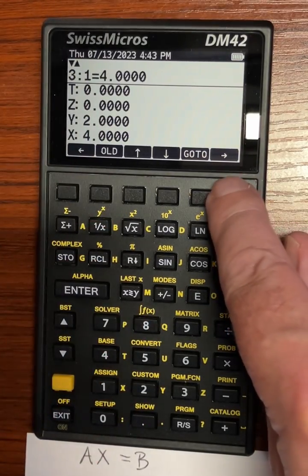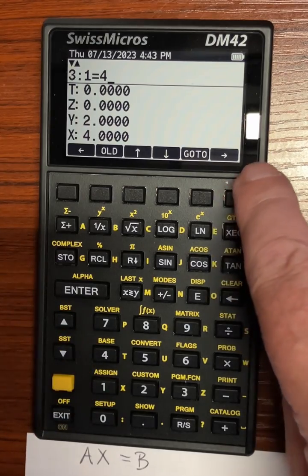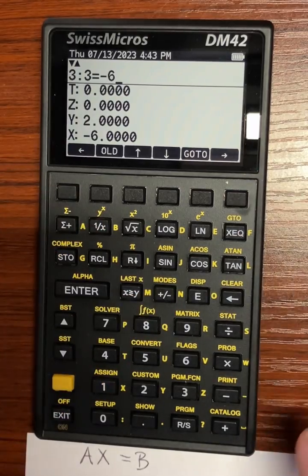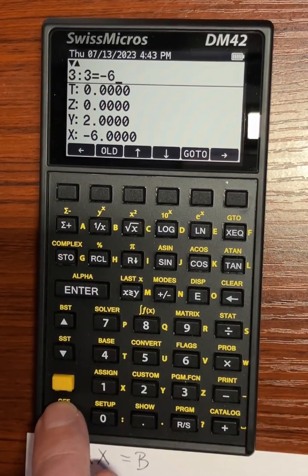Third row: four, negative seven, negative six. So that matrix is entered.